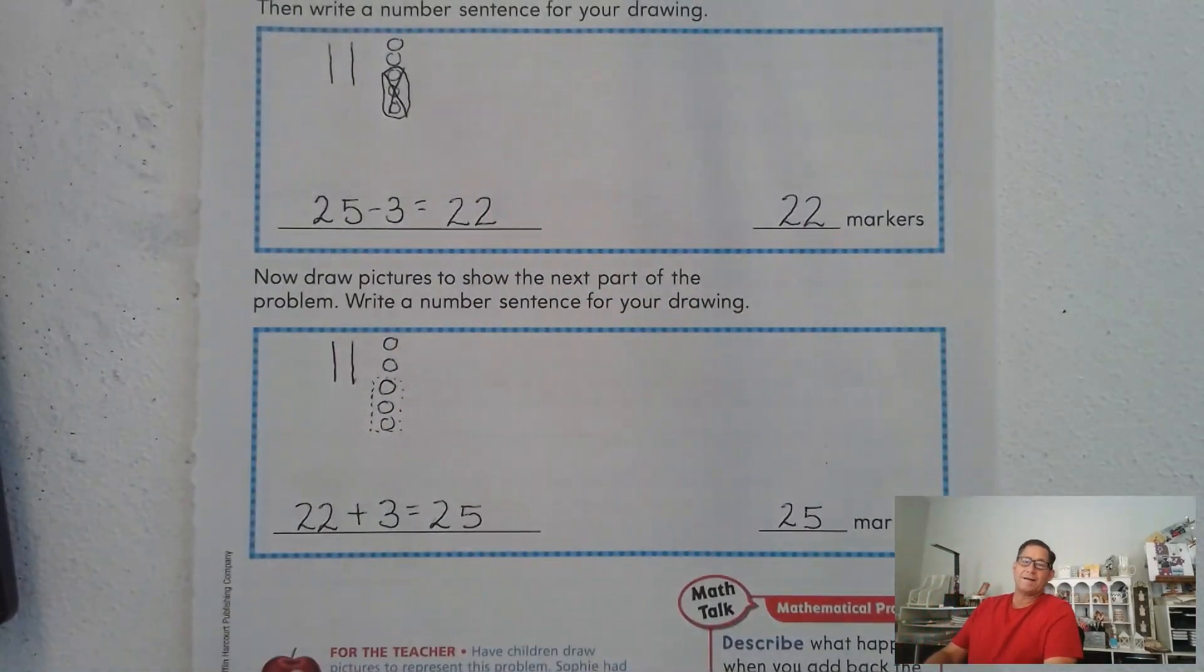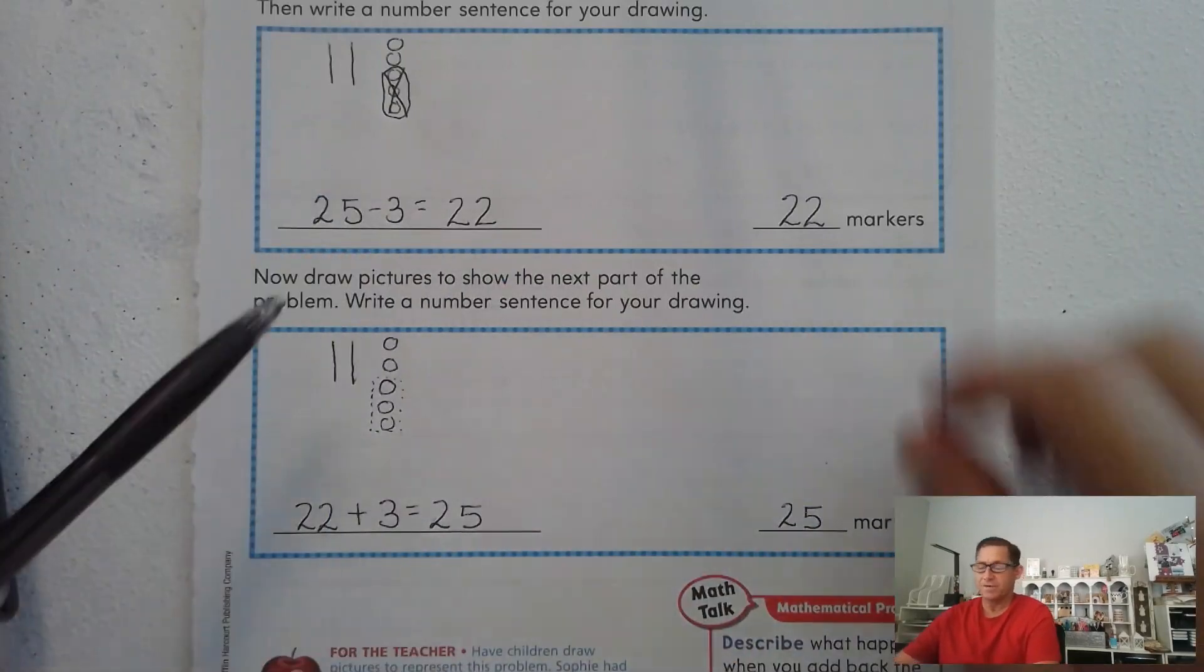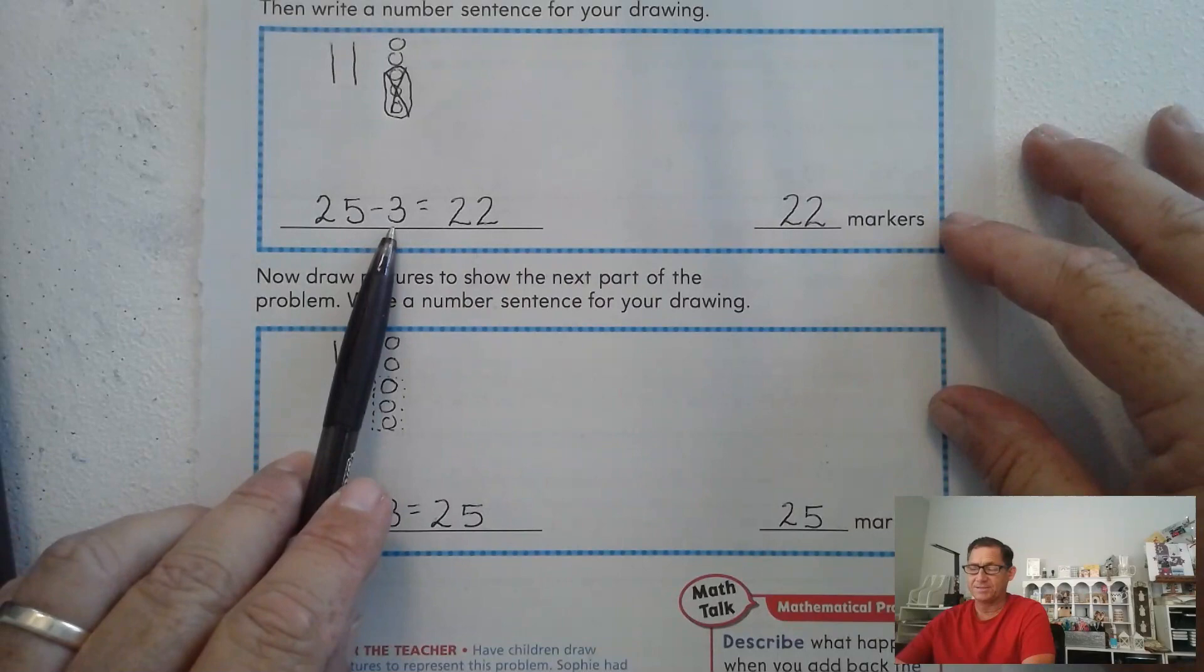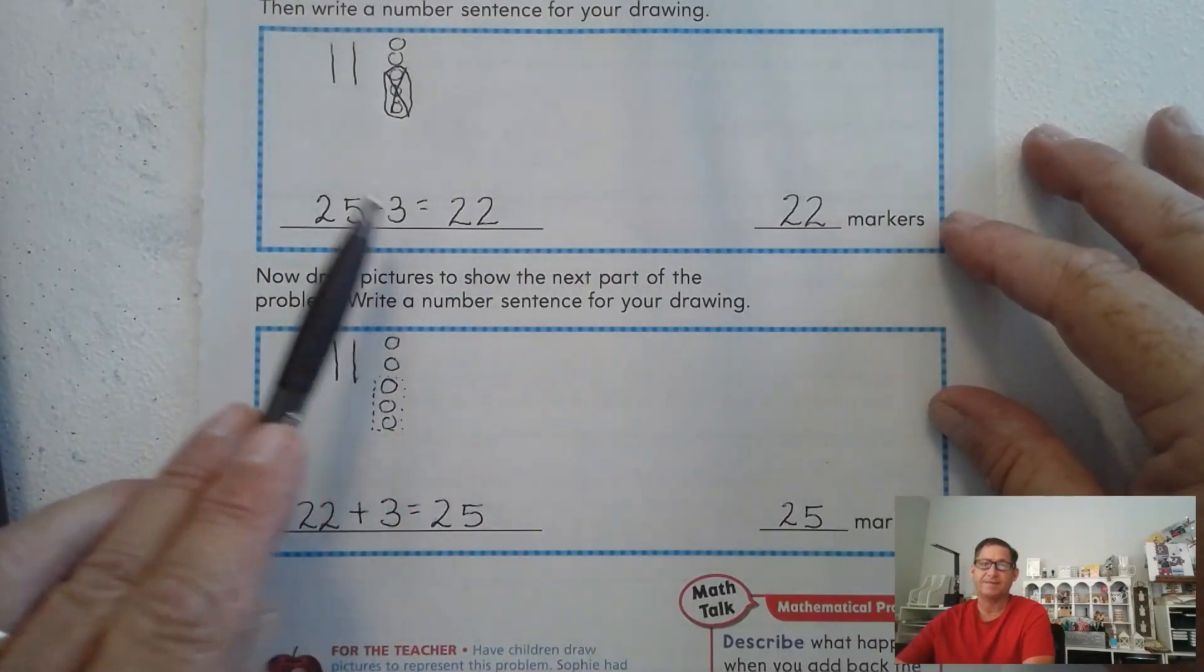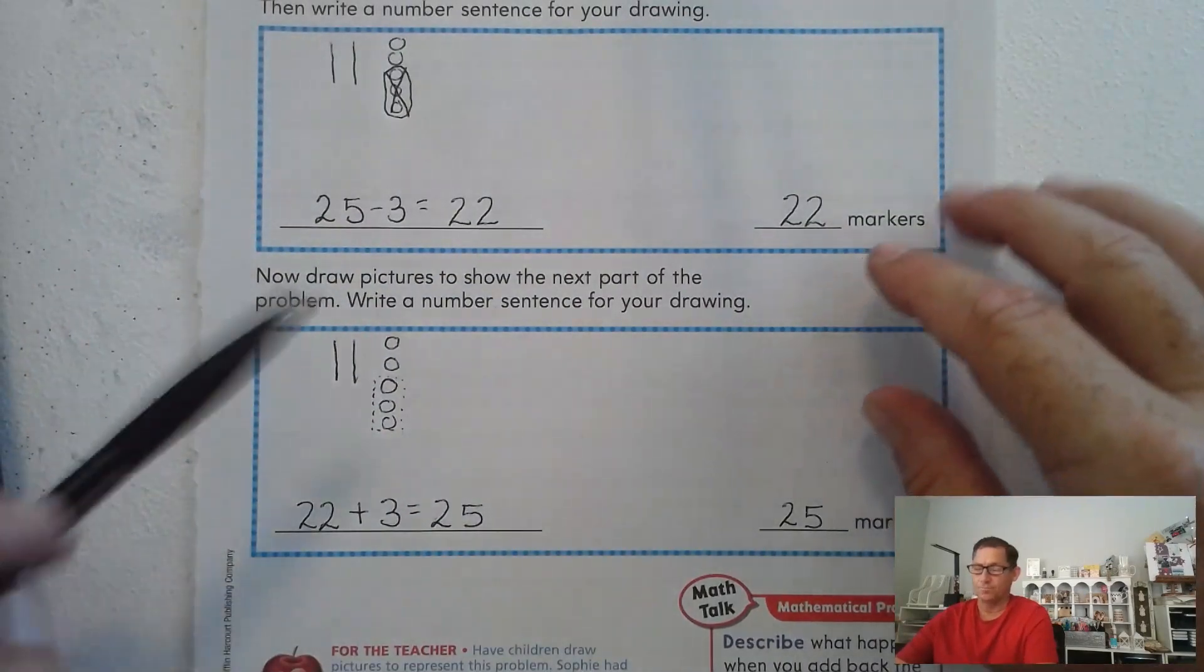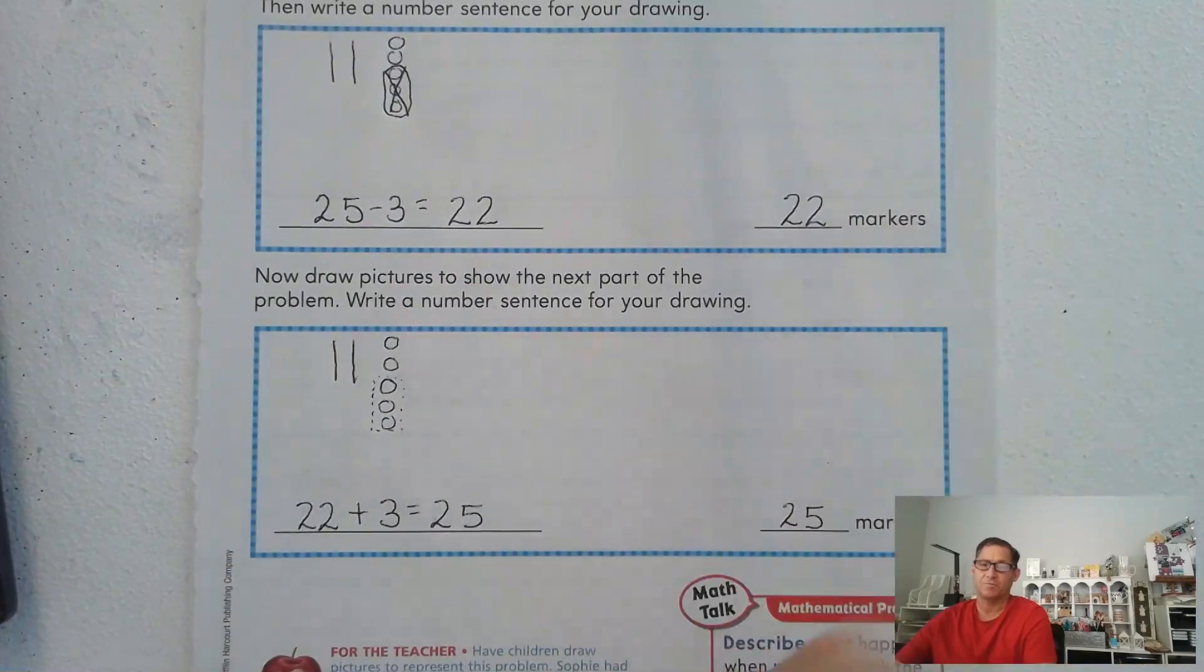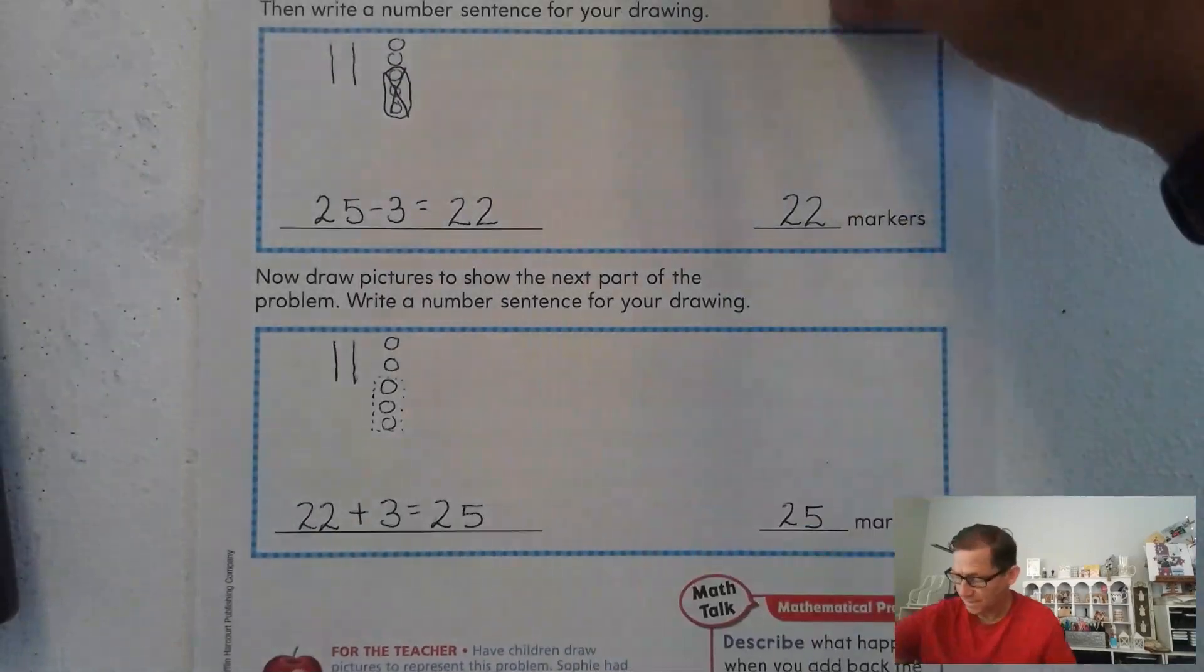Now, why is this important? Why are they having us do this? Because basically this models the idea of a math fact. 25 minus 3 equals 22. If that's true, then 22 plus 3 equals 25. Or we could say 25 minus 22 equals 3. So they're related, right? Just like any other math fact.